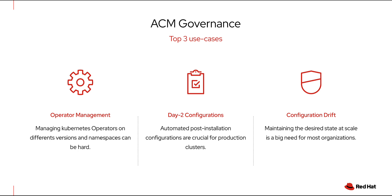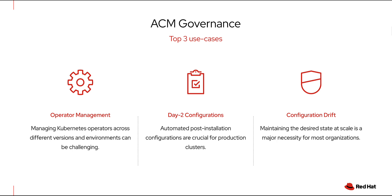For most ACM users, this helps with three main problems. Number one: operator management — much of the OpenShift experience comes from using certified Kubernetes operators. Number two: post-install configurations — after installing a cluster there are always post-install adjustments to make so the cluster is ready for production workloads. Policies can help automate configurations such as network settings, identity providers, and more.